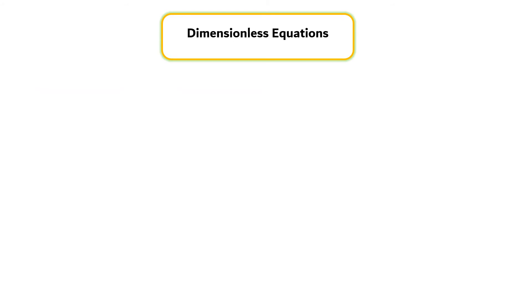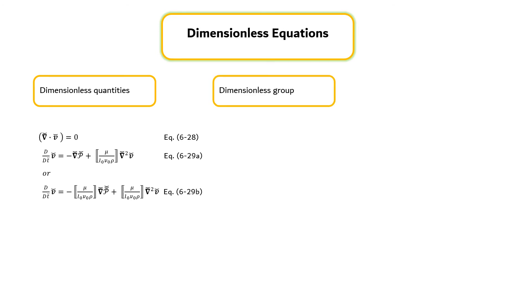When the equations of change in equation 6-21 and 6-22 are rewritten in terms of the dimensionless quantities, they become equation 6-28 and equation 6-29. In this dimensionless equation, the four scale factors appear in one dimensionless group. The reciprocal of this group is named after a famous fluid dynamicist as given by equation 6-30.